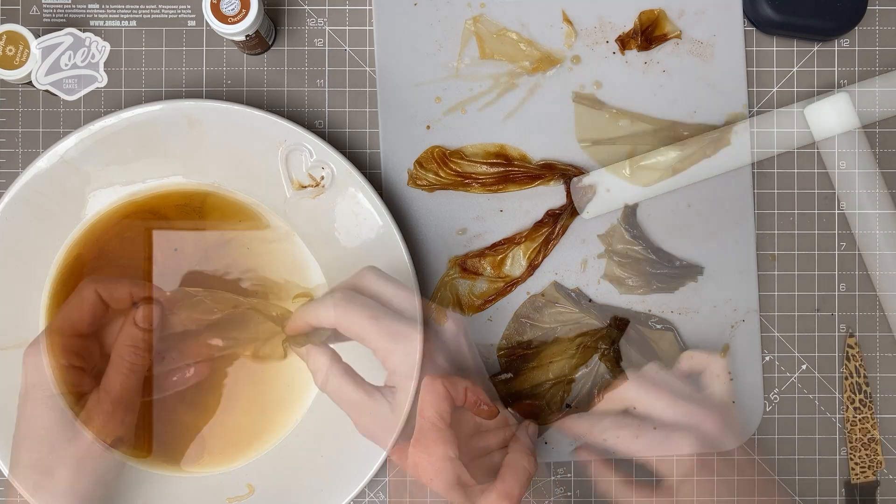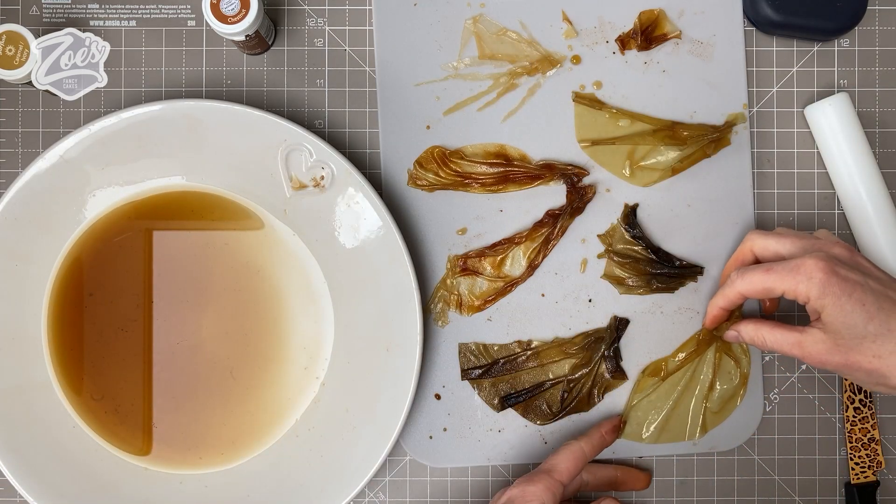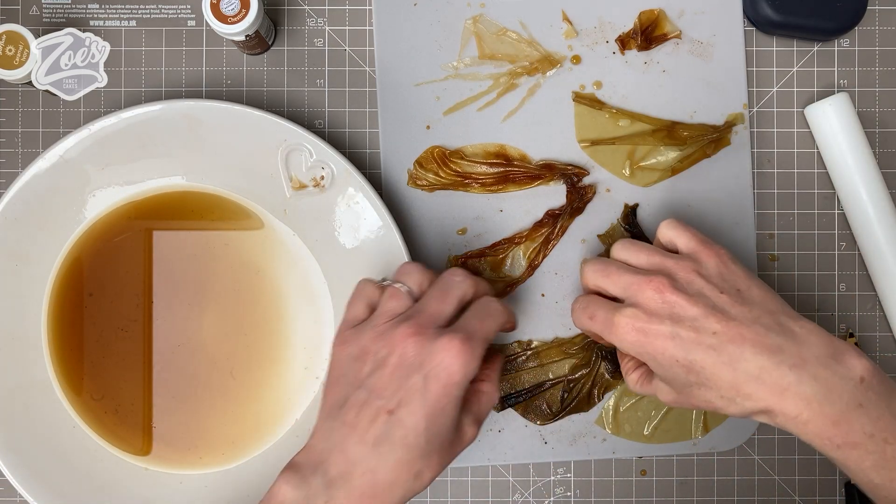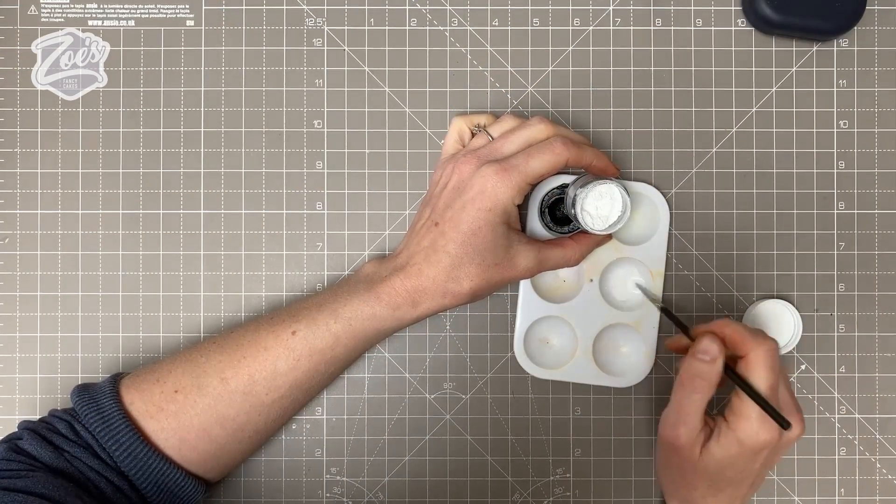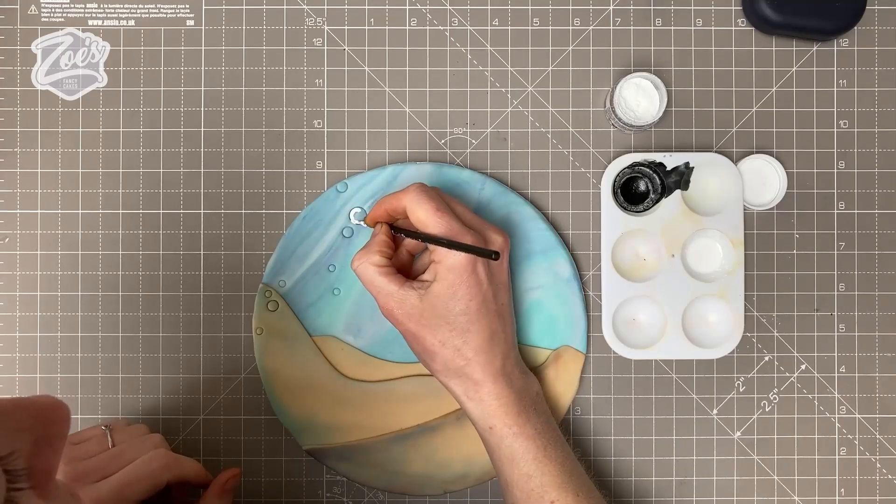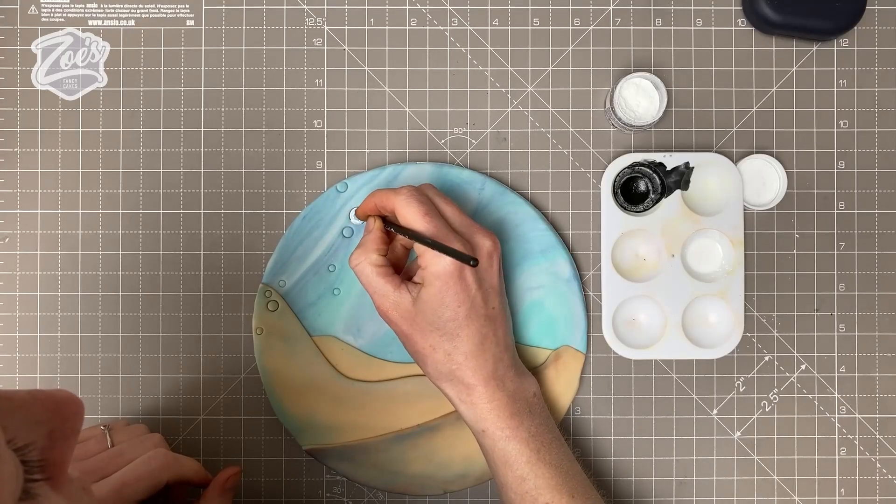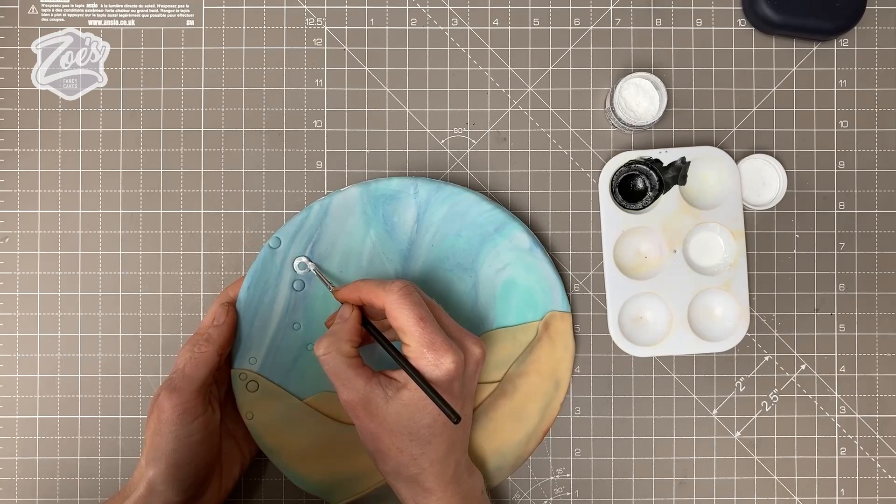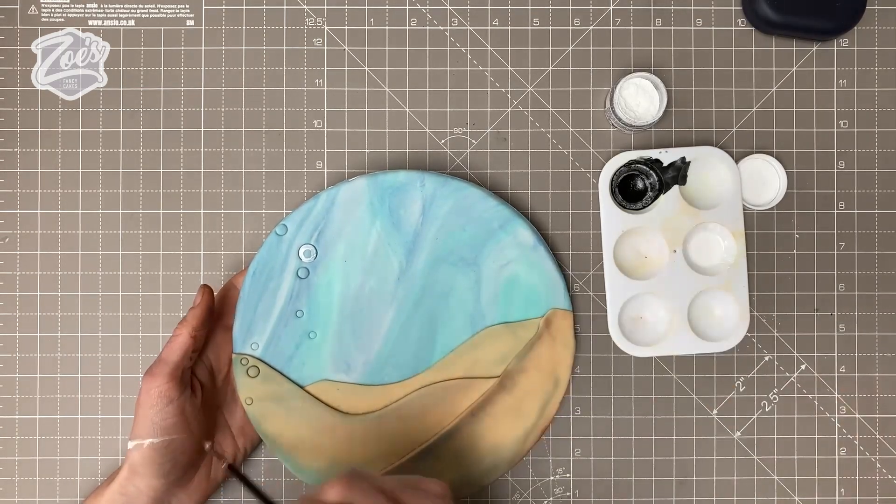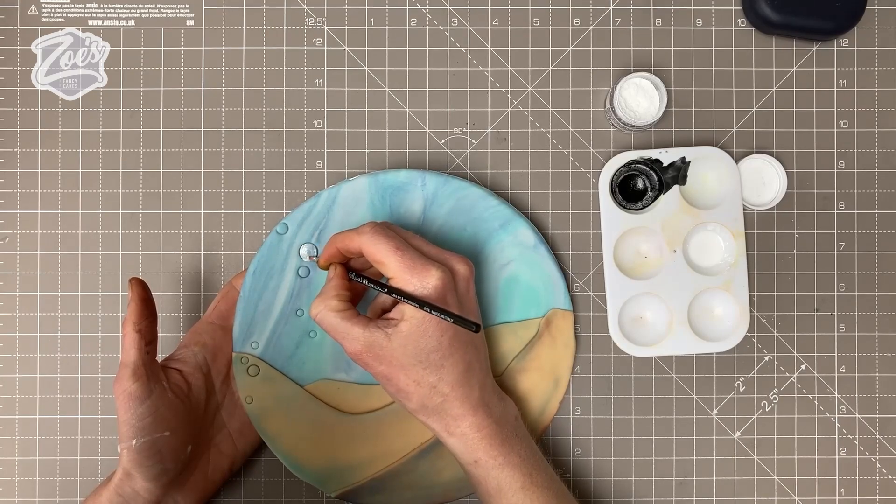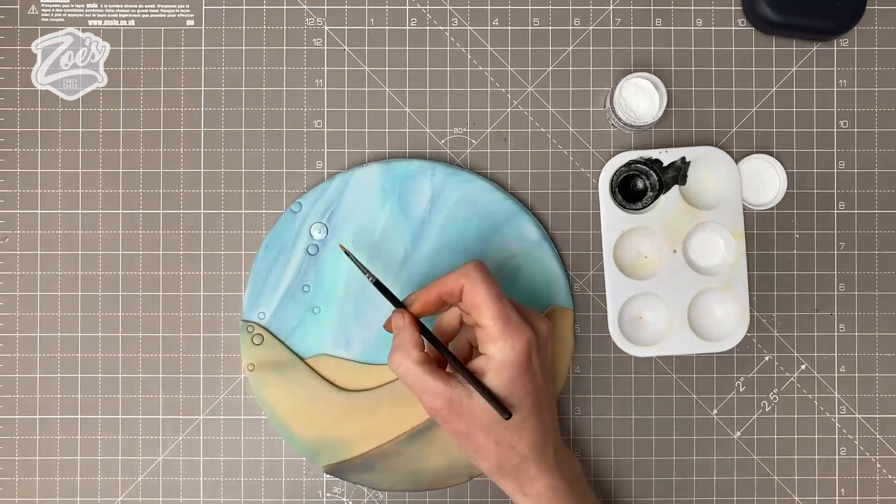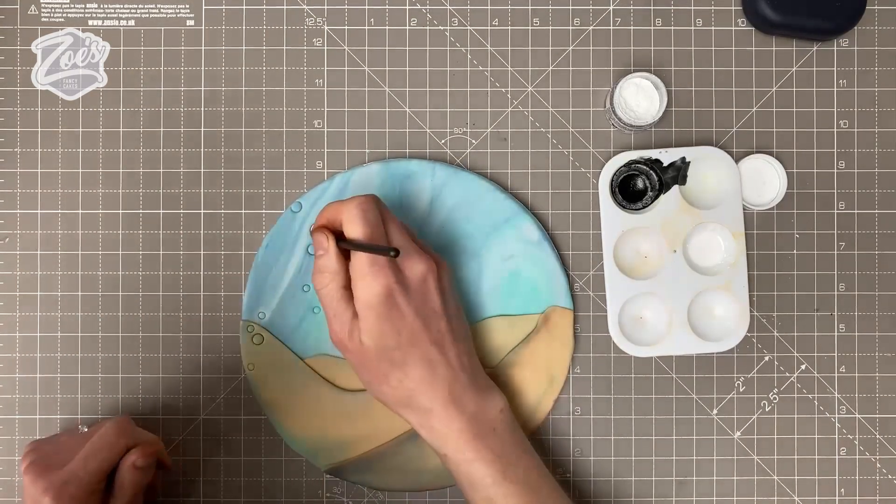I'm going to let those bits dry. Let's paint our bubbles. I'm using some white edible powder mixed with rejuvenated spirit to create a paint. We're going to paint inside those bubbles. You want the white more solid in color around the outside edge of the bubble, then have it become more transparent as it comes to the middle.